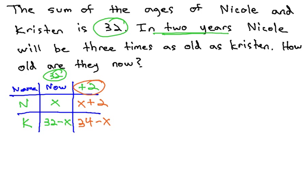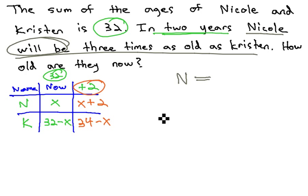Now, we're ready to make an equation about what happens in 2 years. In 2 years, Nicole will be 3 times as old as Kristen. Nicole, n, will be equals 3 times Kristen.